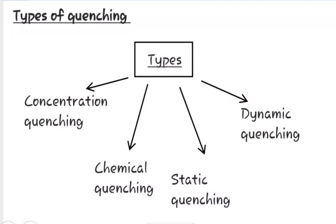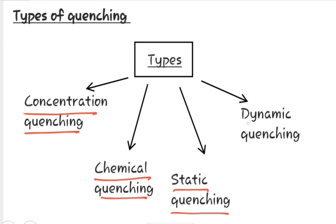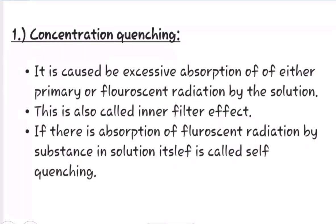Now let us see what are the types of quenching. There are four types of quenching: first is concentration quenching, then chemical quenching, then static quenching, then dynamic quenching.